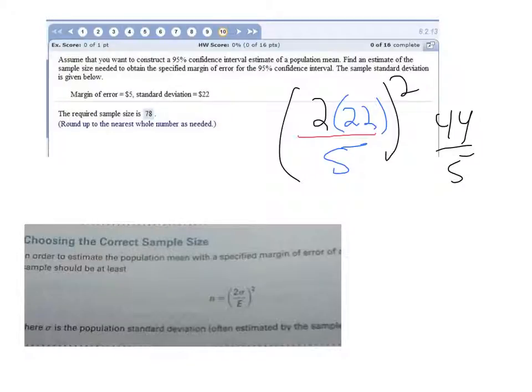Divided by 5 is, what is that? 8.8. And then we're going to square it. And then we always have to round up. And that's where they got the 78.